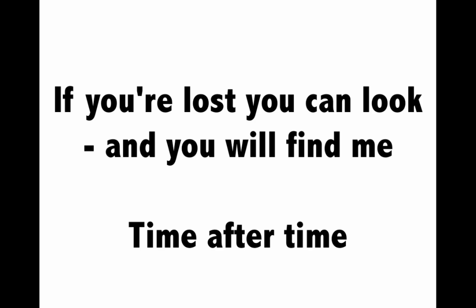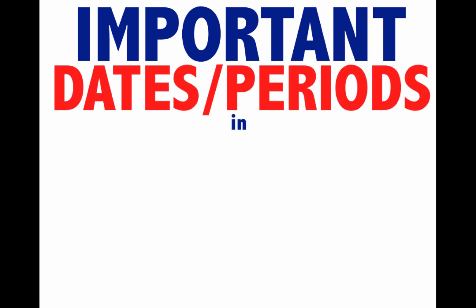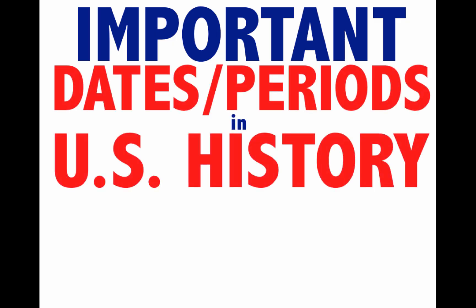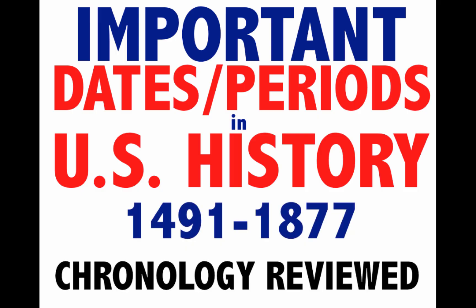Today we're going to start off with the lyrics of a really amazing song: 'If you're lost, you can look, and you will find me, time after time.' That's what we're all about at apushexplained.com. Joe's Productions, we got your back, time after time, because today we're breaking down important dates and periods in U.S. history from 1491 to 1877. These are the key things you should know.